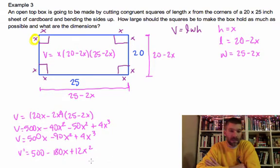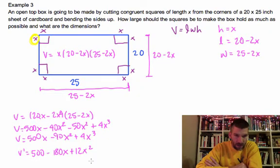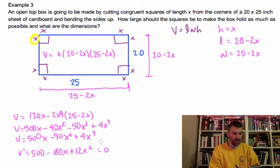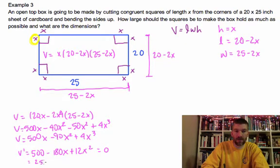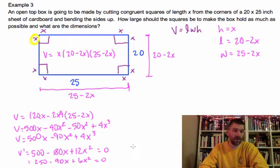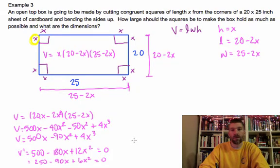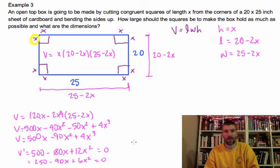What I would recommend on this, it doesn't look like it's going to be anything that would factor. When I set this thing equal to 0, 180 divided by 12 is 15, but 500 divided by 12 doesn't work. I can divide a 2 out of everything. That gives me 250 minus 90x plus 6x squared, but I'm pretty sure that doesn't factor either. So you've got two options. One is to use quadratic formula, and the other one is to graph it and find where it crosses the x-axis.